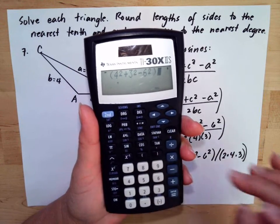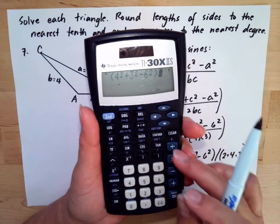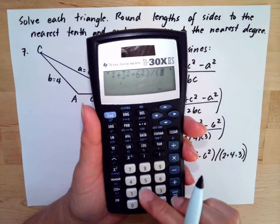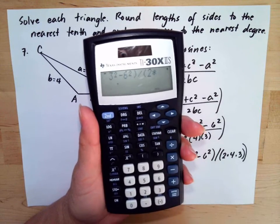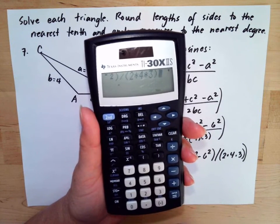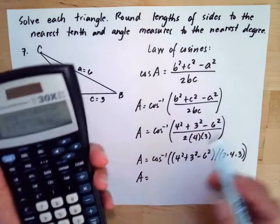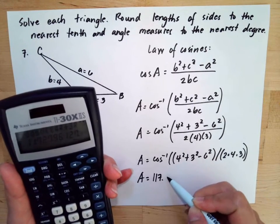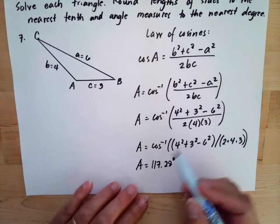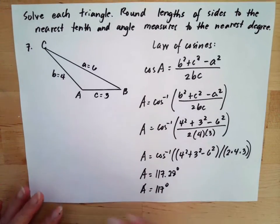Close the numerator parenthesis, then divide, then open the denominator parenthesis with 2 multiplied by 4 multiplied by 3, close it, then close the whole expression and hit Enter. The result is 117.28 degrees. Since we round to the nearest degree, angle A equals 117 degrees.